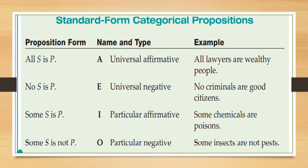Here is a chart to help you remember the four types of categorical proposition. 'All S is P' — A is universal affirmative. 'No S is P' — E proposition is universal negative. The particulars: I is affirmative — 'Some S is P' — and O is negative — 'Some S is not P.' In the universal category, one is affirmative (A) and the other is negative (E).